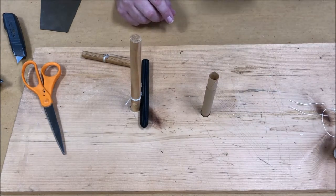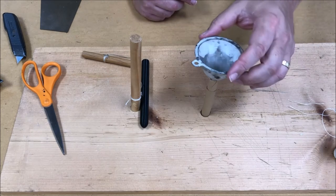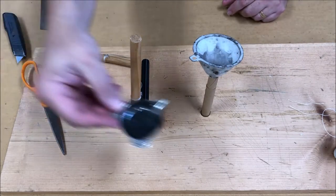The next step is to charge the cartridge and in period the charge was 60 grains of musket powder. So we have 60 grains.